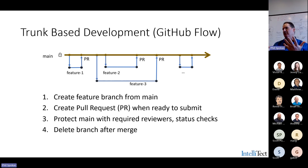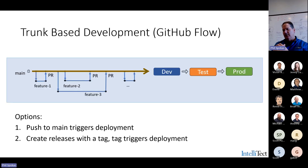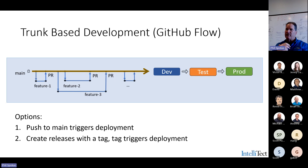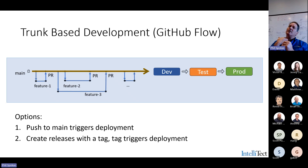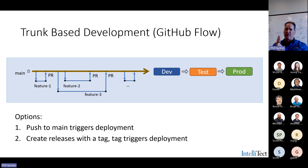One deployment approach is we take main and every time we push to main, that triggers a deployment to dev, which leads to a deployment into a test environment, which leads to deployment into production. There can be more or fewer environments — we have a project right now in early days where we only deploy to one environment. How you get from dev to test to prod is variable, and that's one of the challenges we face in GitHub, controlling that deployment.